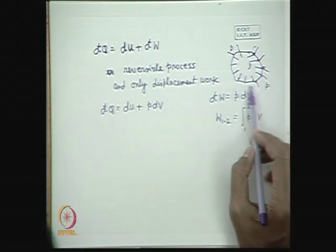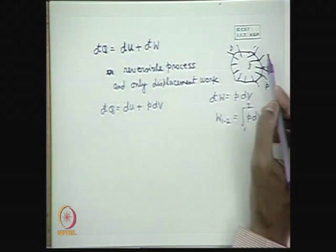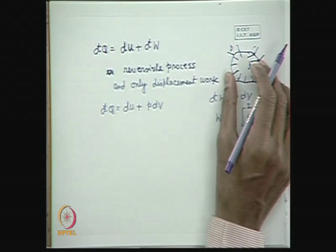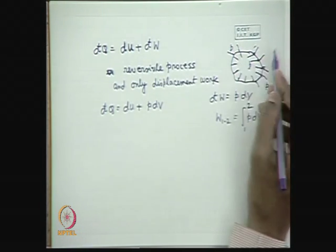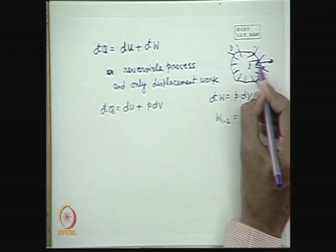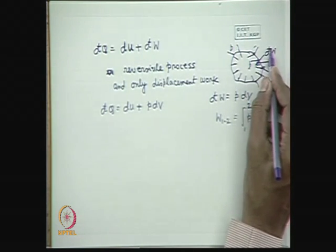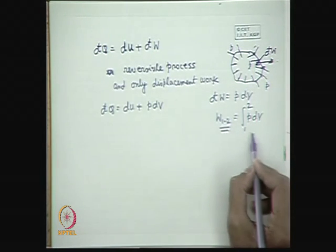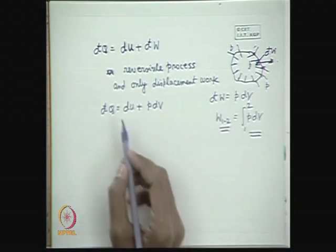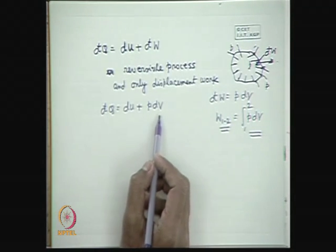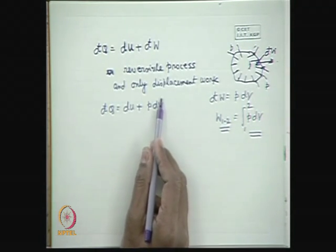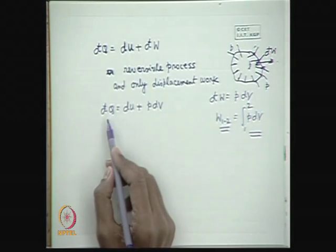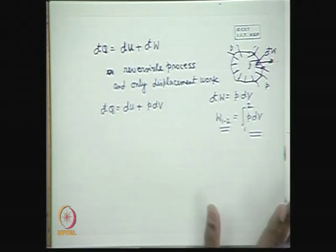Under the conditions for a reversible process where only the work transfer is confined to the displacement of the system boundary, either expanding or collapsing, the work transfer takes place in either direction. That means either work may come out or work may go in. Under reversible condition this work transfer can be expressed as p dV. Therefore, for a closed stationary system we can write the first law as dQ = dU + p dV.